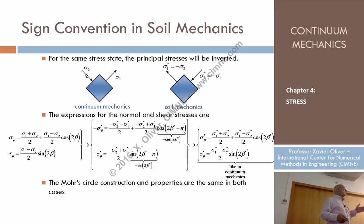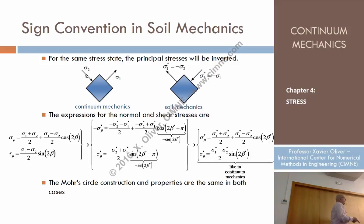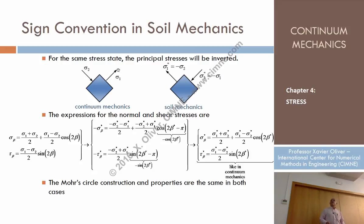The names also change. If we keep sigma 1 as the largest value, then in soil mechanics sigma 1 is the most compressive stress and sigma 2 is the less compressive stress — whereas in continuum mechanics sigma 1 is the most tensile. So: sigma 1* = minus sigma 2 (continuum mechanics), and sigma 2* = minus sigma 1.